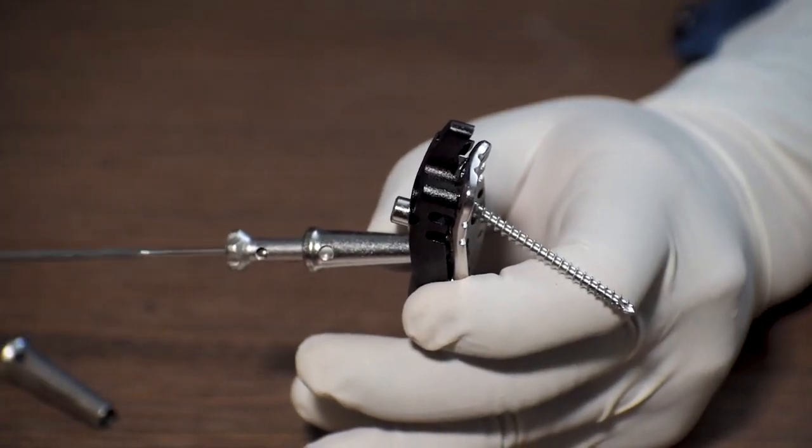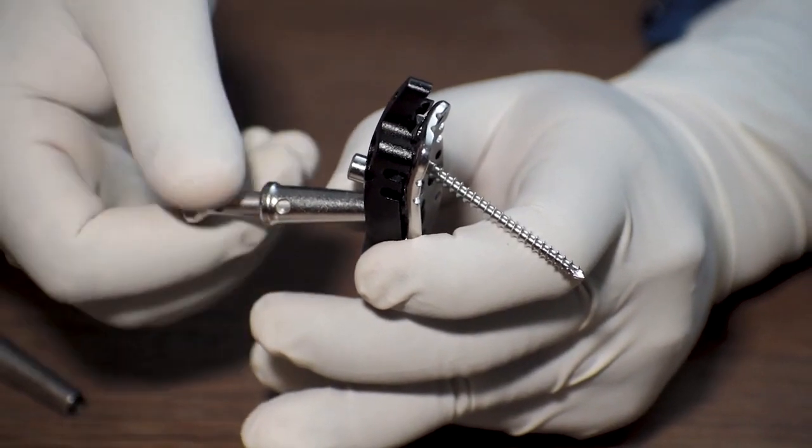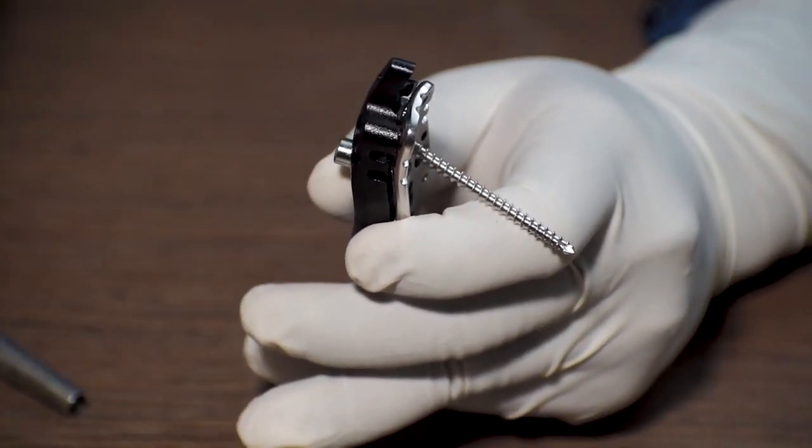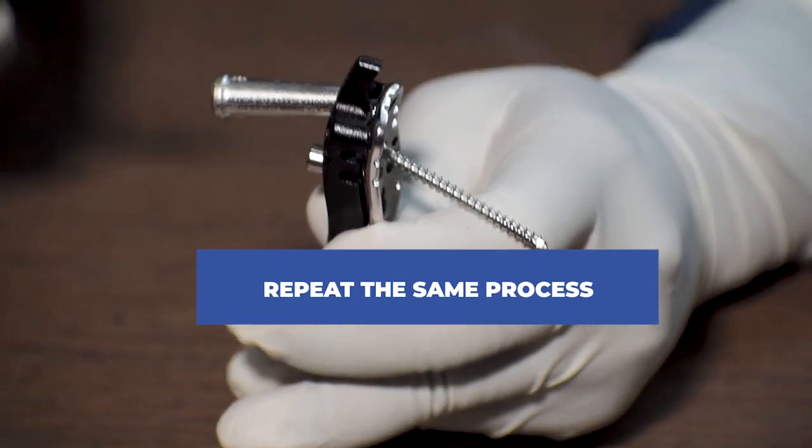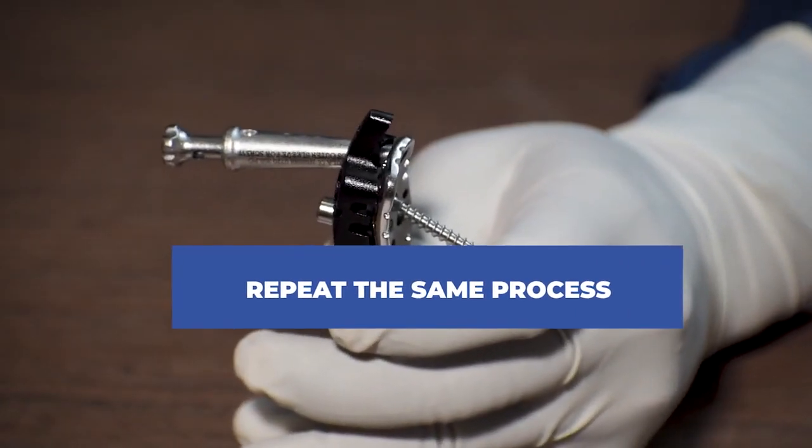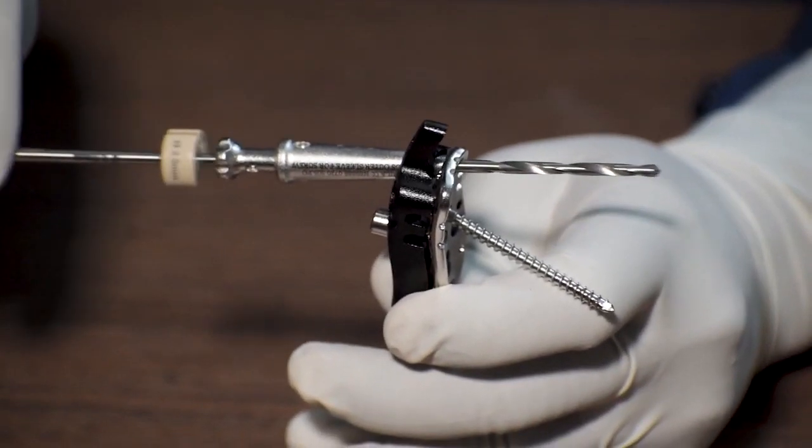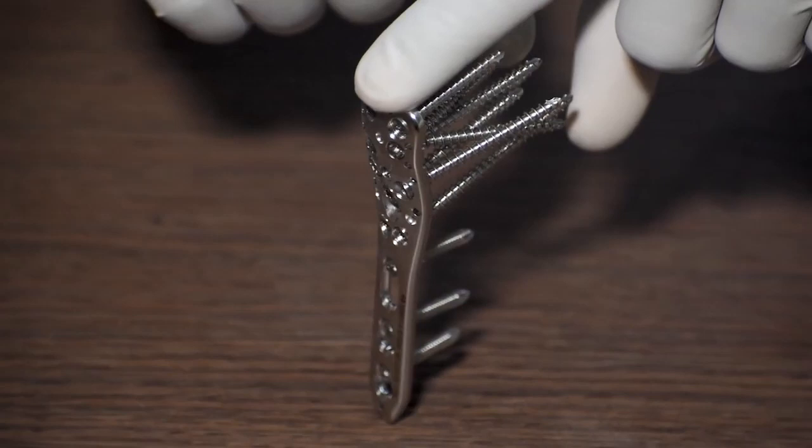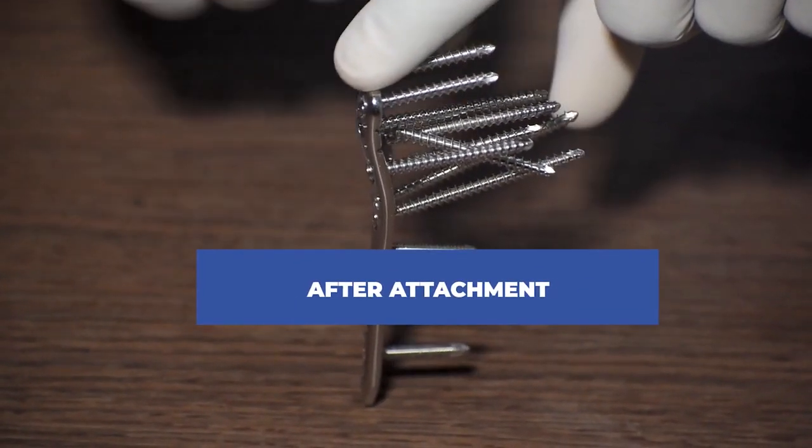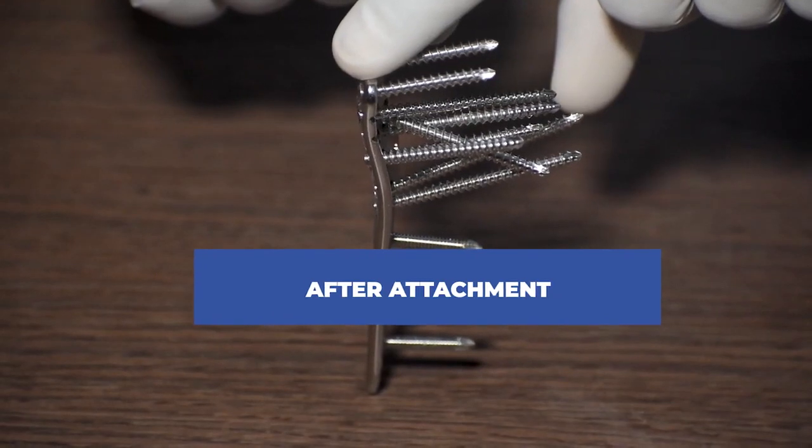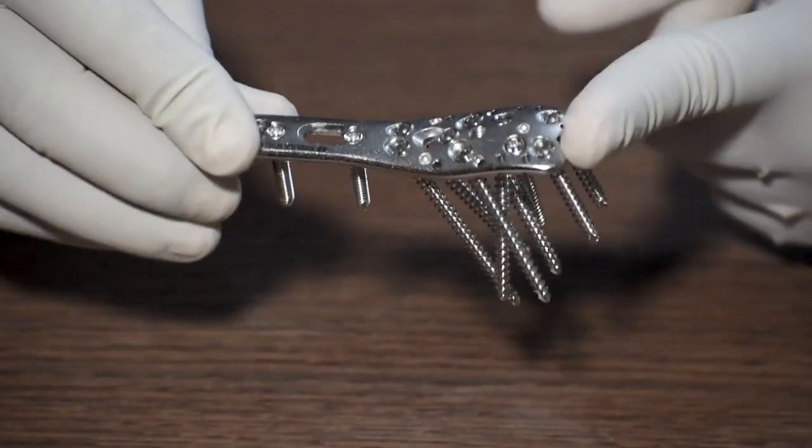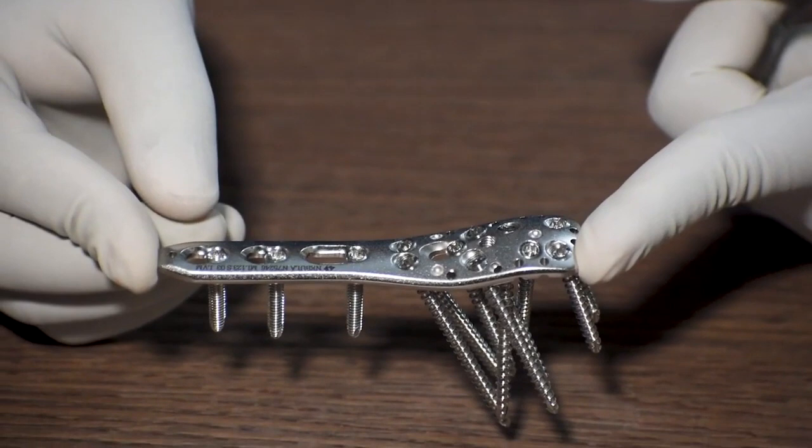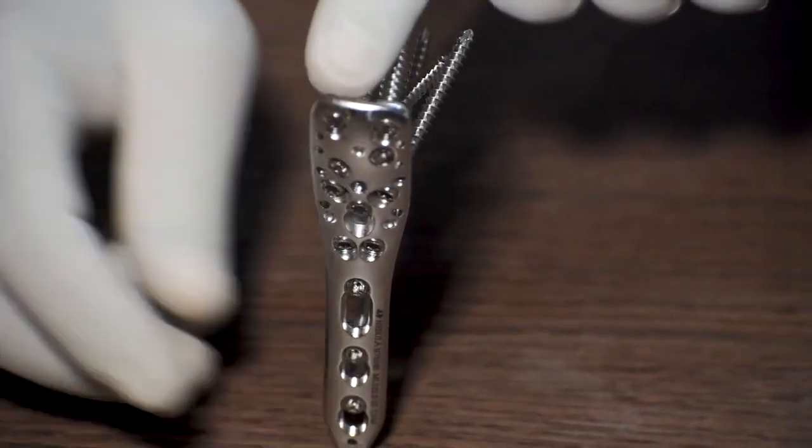Once the screw is attached, we will remove the reduction device. Then we will remove the drill sleeve and the outer sleeve. Thereafter we will repeat the same process to fix all the other screws as desired by the surgeon. As you can see there is a process that you can remove the screw.